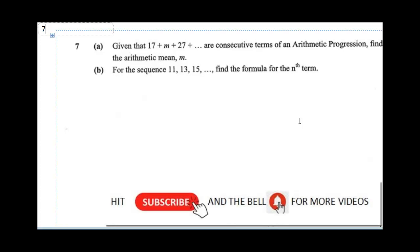Question seven says, given that 17 plus M plus 27 are consecutive terms of an AP, find the arithmetic mean. Now, for 17 plus M plus 27, for our AP, our first term is 17.